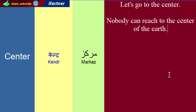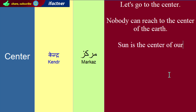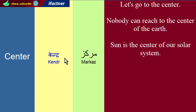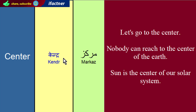Hum issa bhi keh sakte hain: 'Let's suppose sun is the center of our solar system.' Kyun ki tamam ke tamam joo planets hain, wo sooraj ke gird ghoomtay hain — ek chakkar mein. Toh hum keh sakte hain ki sun jo hai, wo humare solar system ka center hai. Sun is the center of our solar system.